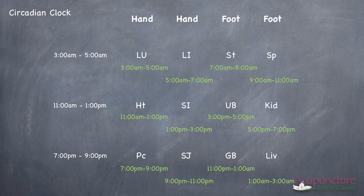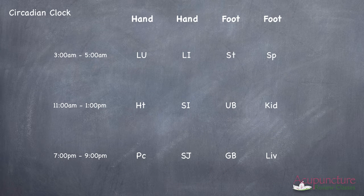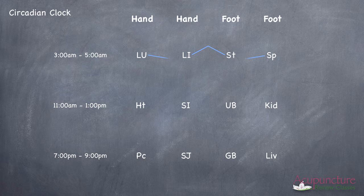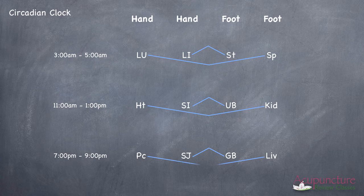If you go to the next diagram, what you can do here is you want to make a line that goes from the LI to the stomach, so you have a little line there, and then one that connects the lung and the spleen. Then go down and connect the SI with the UB, and the heart to the kidney. Go down to the San Jiao and the gallbladder and connect those with a line, and go to the pericardium and the liver and connect that with a line.